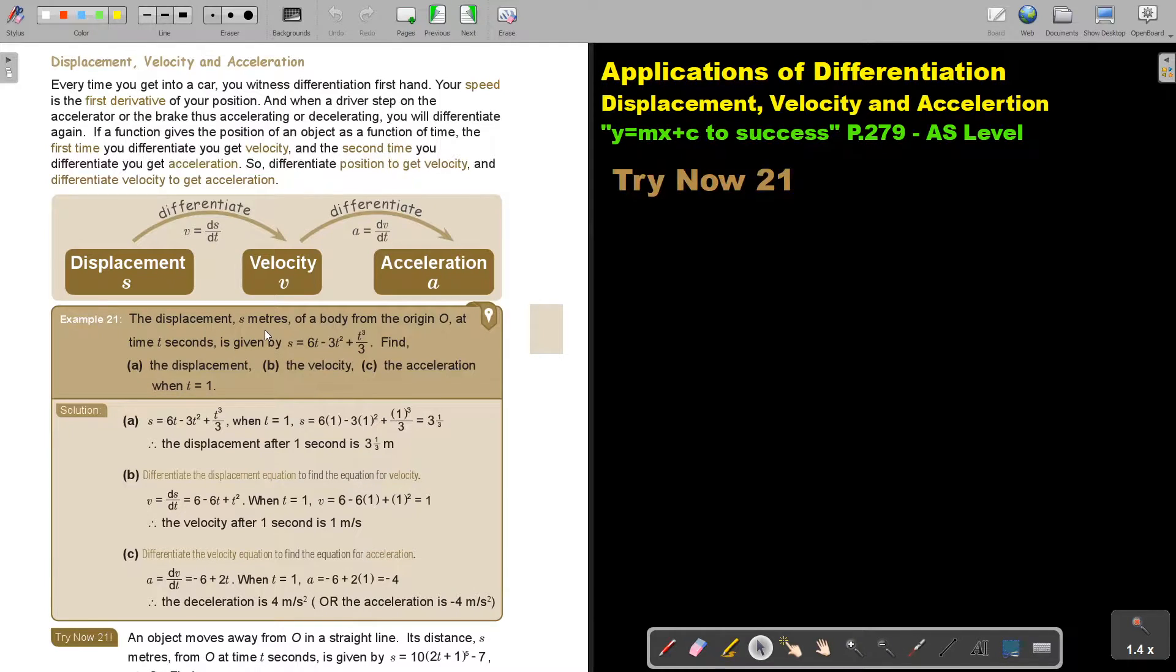The displacement in meters of a body from the origin O at time t seconds is given by this function. Find the displacement, the velocity and the acceleration when t is 1. Now displacement, I will just substitute in the place of t in the original function. So the displacement after one second is 3 meters. For the velocity, you must differentiate the displacement equation to find the equation for velocity. So now I'm going to first differentiate, and then I'm going to substitute 1. And the velocity after 1 second is 1 meter per second.